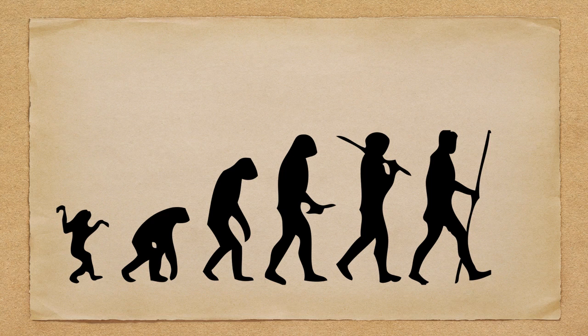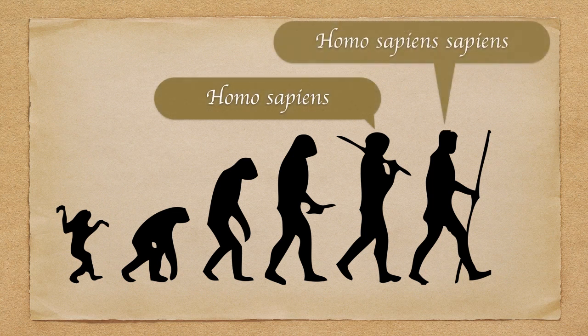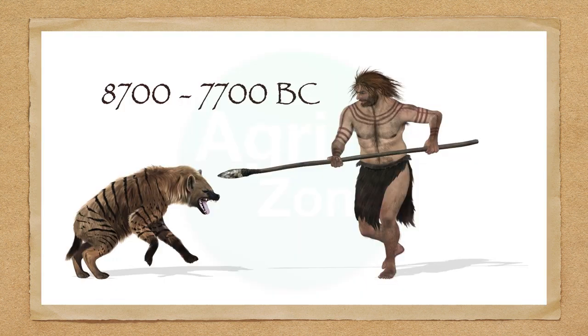Sapiens means a learning habit, and due to continuous learning habit, the sapiens were converted into Homo Sapiens Sapiens, which is known as modern man. During 8700 BC, these men were spending their lives wildly.